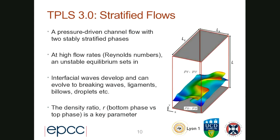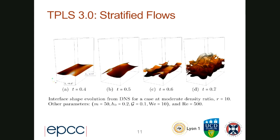Then we have stratified flows. The major difference here is that the less dense fluid is on top, which allows you to have stable flows. At certain flow rates you get an unstable equilibrium setting and interfacial waves develop. You can get very complicated structures: breaking waves, ligaments, drops, all sorts of things. The density ratio is an important parameter in these physical effects. The exact things that you see depend a lot on the parameters that you choose, but you can see that we're able to simulate very complicated interfaces.